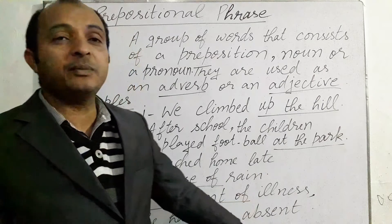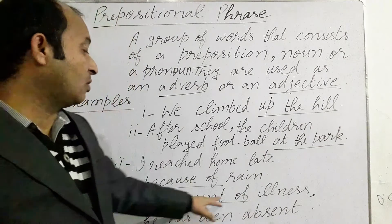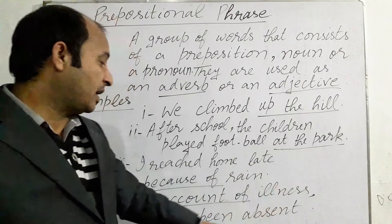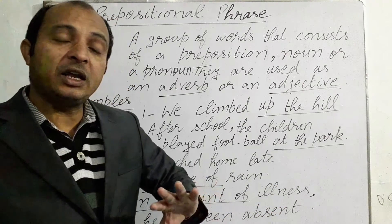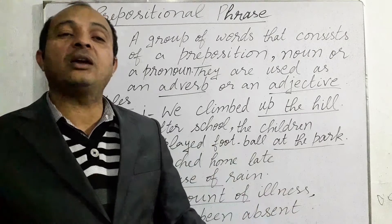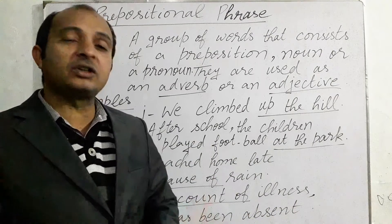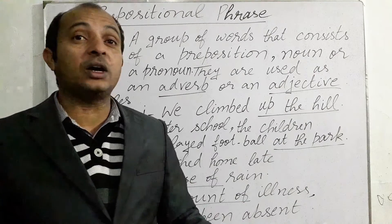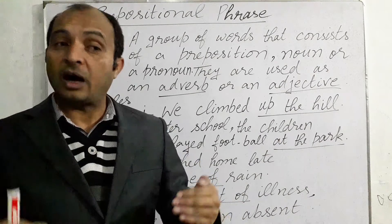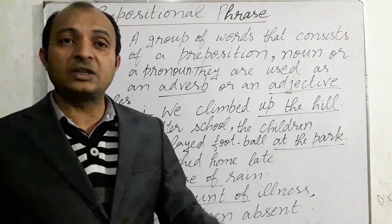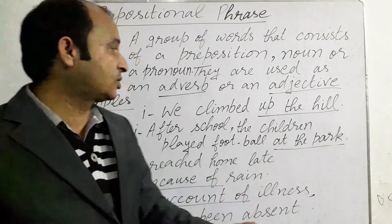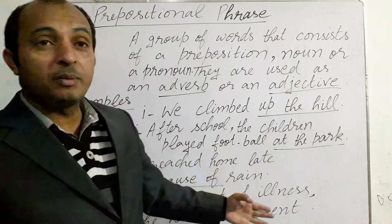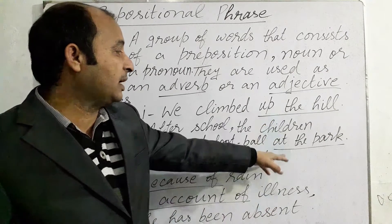'On account of illness, he has been absent.' Here 'on account of' is a prepositional phrase, which adds to the meaning of the sentence. Prepositional phrases are important because they add to the meaning of the idea being discussed in the sentence. Today we have discussed four prepositional phrases: 'up the hill,' 'at the park,' 'because of,' and 'on account of.'